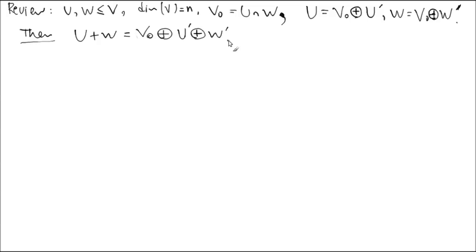From there you can calculate the dimension. How do you calculate the dimension of u plus w? Dimension of v0 plus dimension of u prime plus dimension of w prime. That's how dimension works whenever it's a direct sum. So I would like to explain it here today.